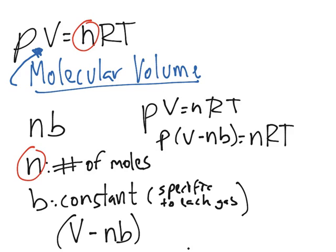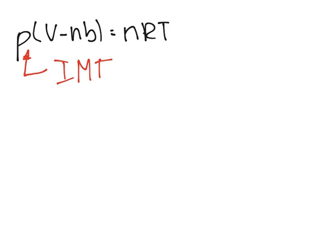Now let's go to the following page. P(V - nb) equals nRT. Now we have to fix the pressure value because of the intermolecular forces, or IMFs.